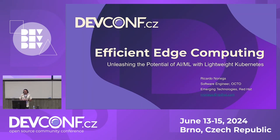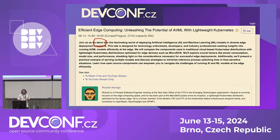During yesterday's keynote, they mentioned words you can identify as written by ChatGPT. For me, one of them is 'unleashing' — you can see it a lot. The other one mentioned yesterday is 'delve,' and as you can see in my abstract, 'delve' is there. So, let's get to business.